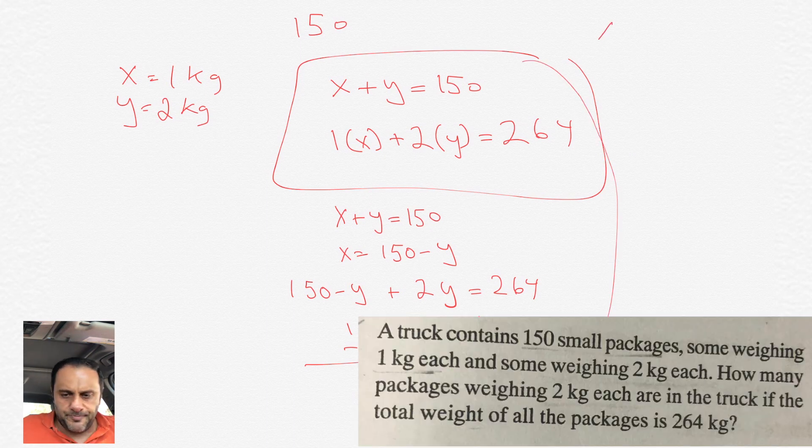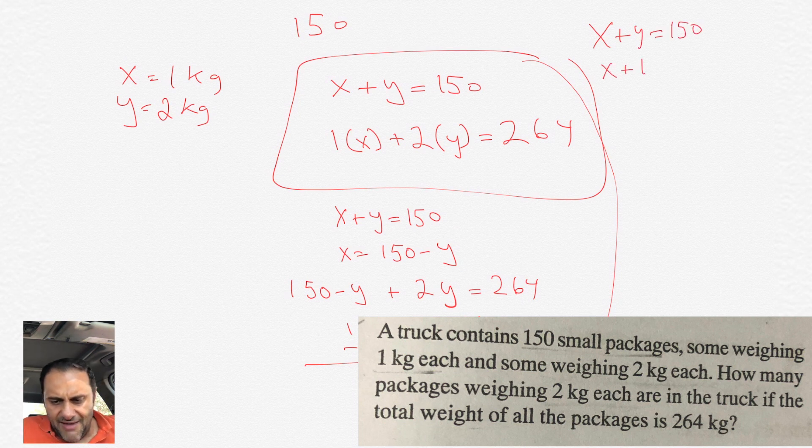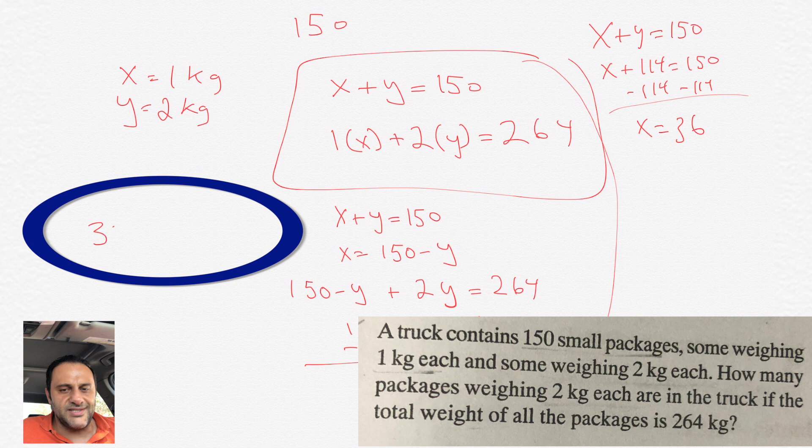So now, just for the heck of it, we could solve for the 1 kilogram packages we have. X plus Y equals 150. We could put in 114 for Y, then we have X plus 114 equals 150. Subtract 114 each side, we can get X equals 36.